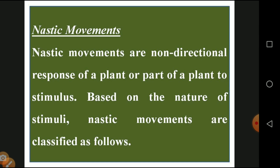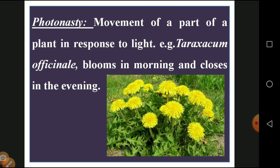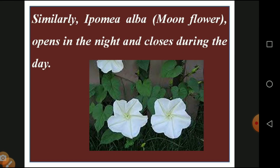Now we will see about nasty movement. Nasty movement is a non-directional movement done in response to external factors — it is the response of the plant or part of the plant to stimuli. Based on the nature of the stimuli, nasty movements are of different types. Photonasty means the plant responds depending upon sunlight. Example: Oxalis flowers bloom in the morning and close in the evening — flower bud opening due to sunlight is called photonasty.